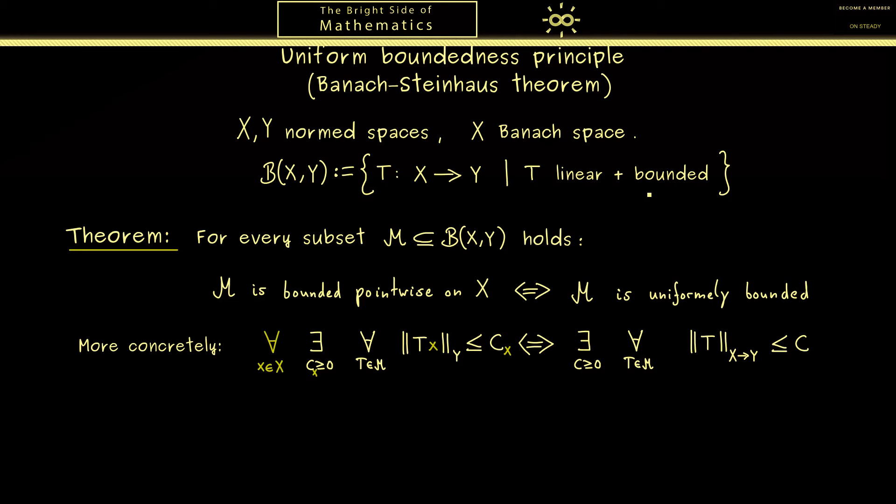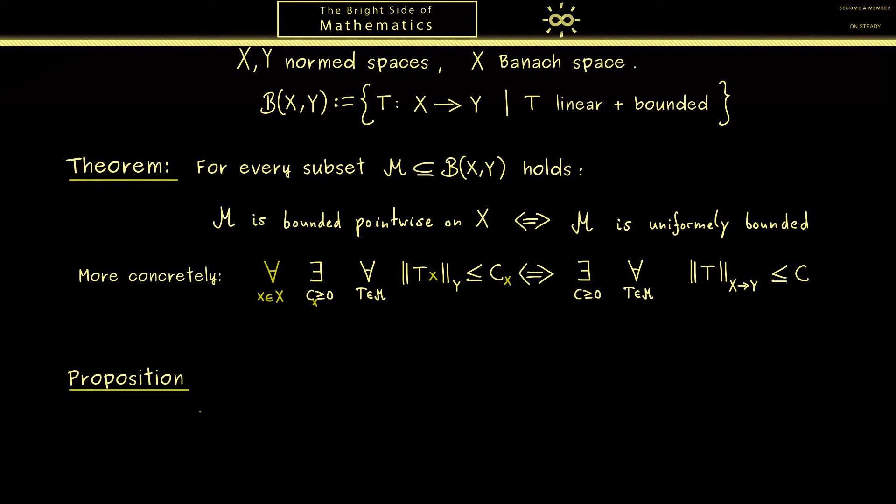Of course the proposition needs the same assumptions as before and we also use the same notation for the bounded operators. Now what happens when we take a whole sequence T_n from the bounded operators when we also know that the limit T_n x exists for all x in X.